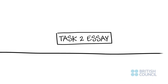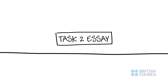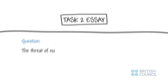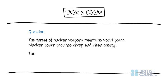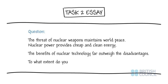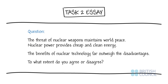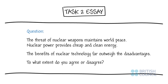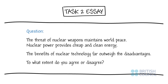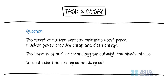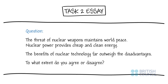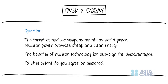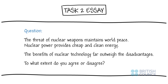Here is one simple way to sequence ideas for effective coherence for a Task 2 essay. For example: the threat of nuclear weapons maintains world peace; nuclear power provides cheap and clean energy; the benefits of nuclear technology far outweigh the disadvantages. To what extent do you agree or disagree?